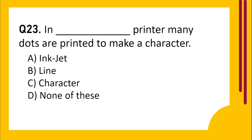Question number 23. In dash printer, many dots are printed to make a character. Option A: Inkjet. Option B: Line. Option C: Character. Option D: None of these. The correct answer is Option C: Character.